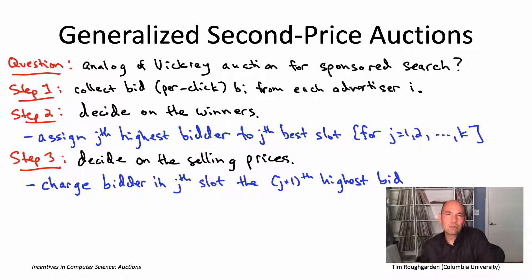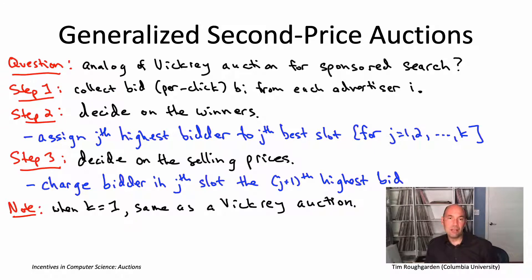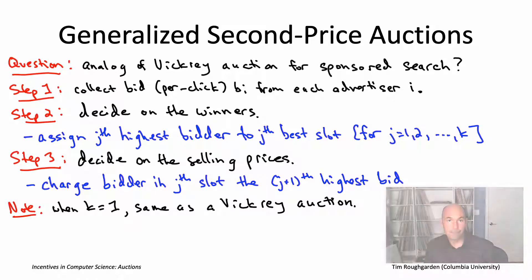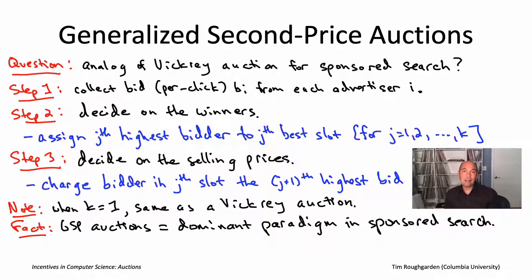These generalized second price or GSP auctions certainly do generalize the Vickrey auction: when K equals one, with only one slot, this is literally the Vickrey auction — the highest bidder wins and pays the second highest bid. So the K equals one special case of a GSP auction is indeed the Vickrey auction. These GSP auctions really are the dominant paradigm in real-world sponsored search. You now know to first order how Google makes the lion's share of its revenue — through auctions of exactly this form. It's the original format adopted by Google almost 20 years ago, quickly adopted by Yahoo and Microsoft Bing. Lots of bells and whistles have been added, but this remains the dominant paradigm.